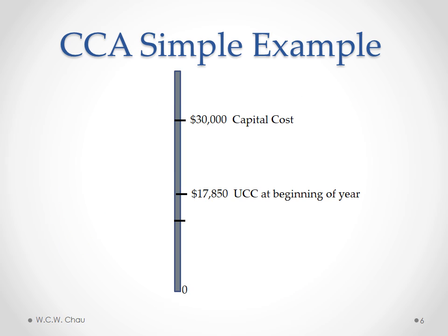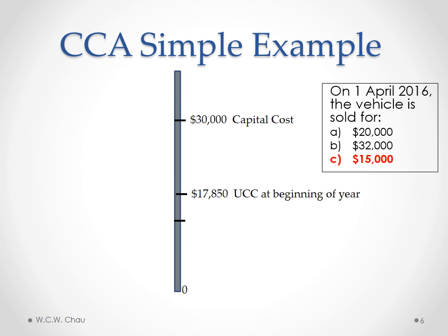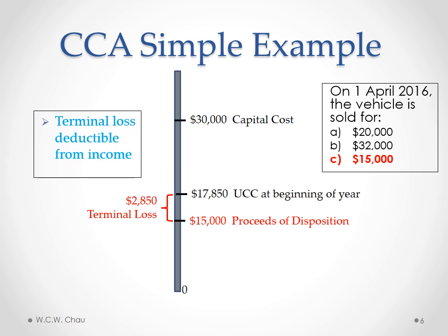The third scenario for the sale of that vehicle is selling the car for only $15,000, so our proceeds of disposition is $15,000. Because that proceeds of disposition is less than the UCC balance of $17,850, we are able to claim the difference as a terminal loss of $2,850. And that terminal loss is deductible from income.